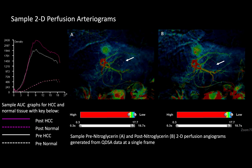This is what the data looks like. Here is a tumor in segments 2-3 of the left hepatic lobe — this is the tumor, and this is normal hepatic parenchyma. These are our ROIs generated for the time points: this is a pre-nitroglycerin time point, and this is a post-nitroglycerin time point. This is normal hepatic parenchyma, and this is tumor. This is the heat map legend. You can already tell from this that at the post-nitroglycerin time points there is a greater density of contrast, as shown by the increased color on the heat map.